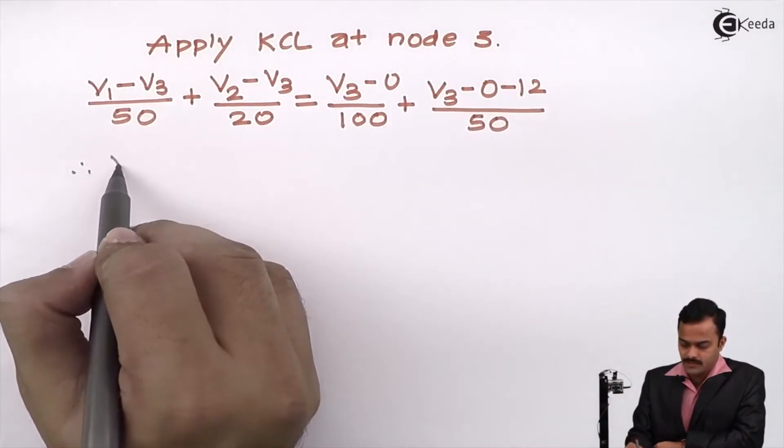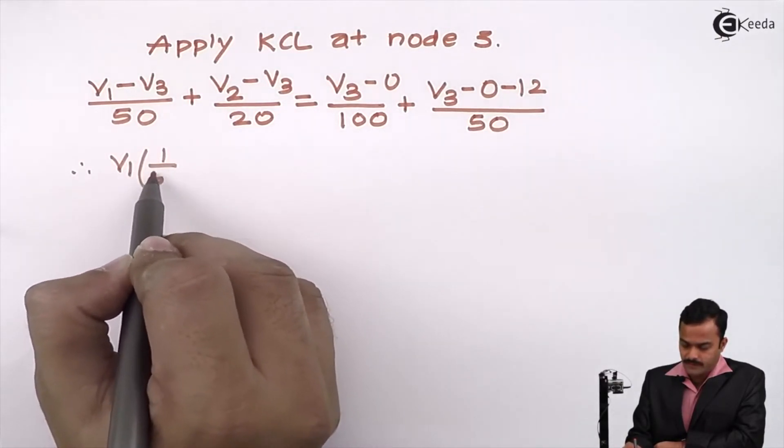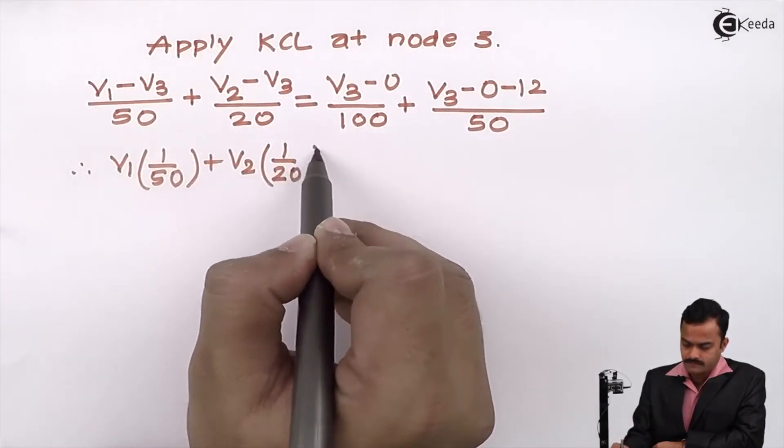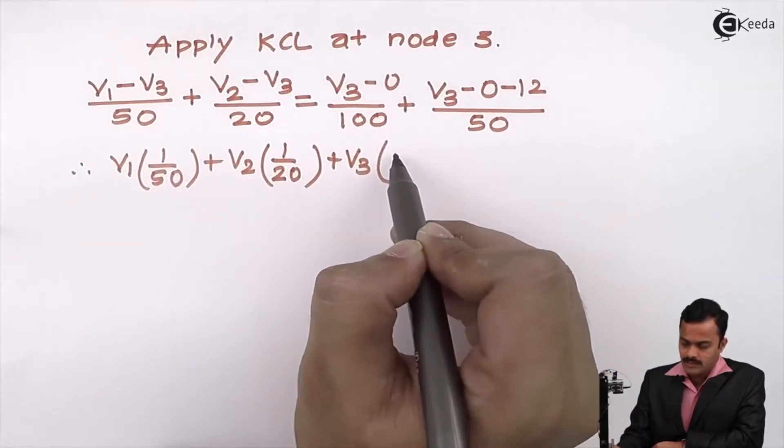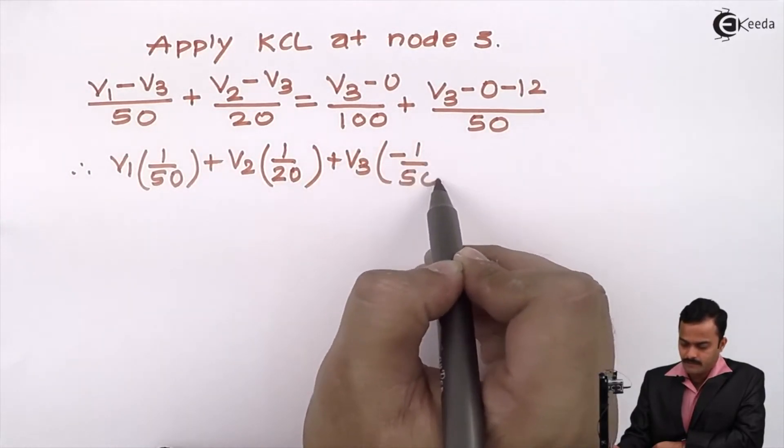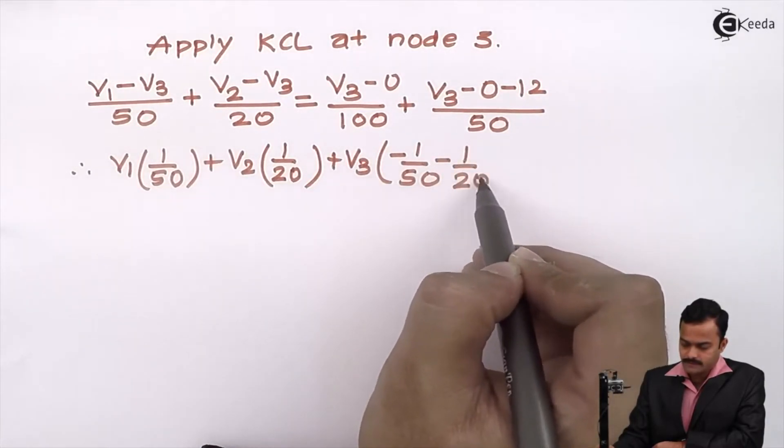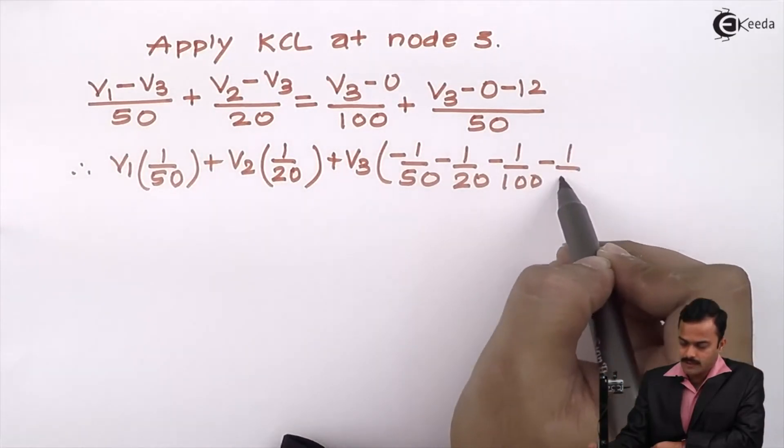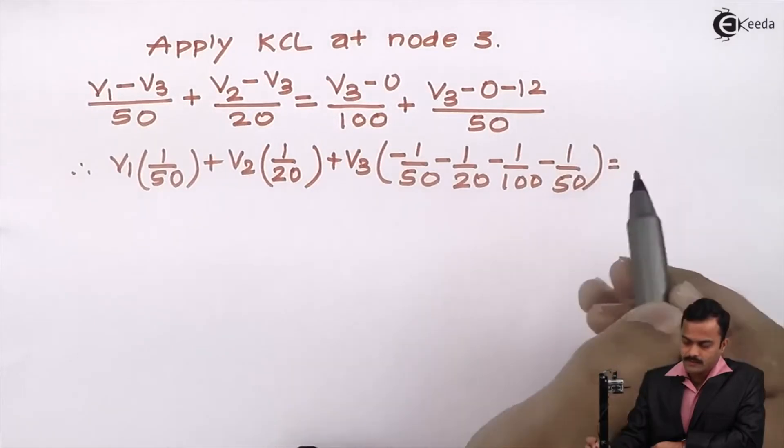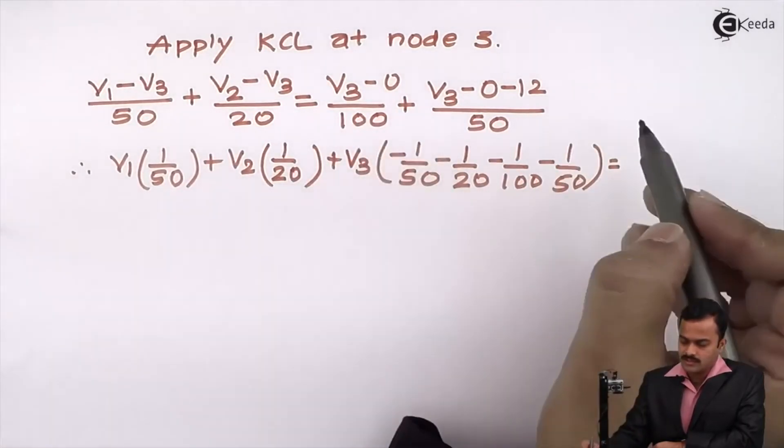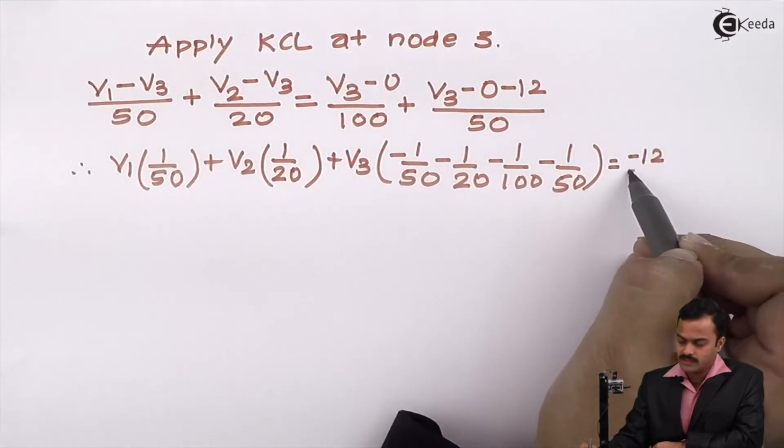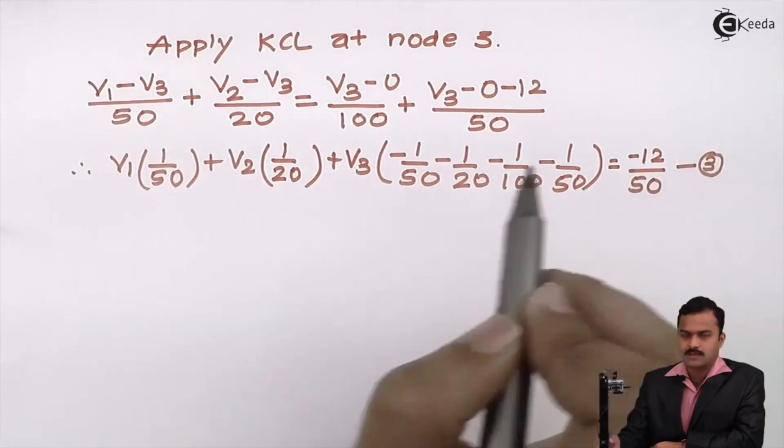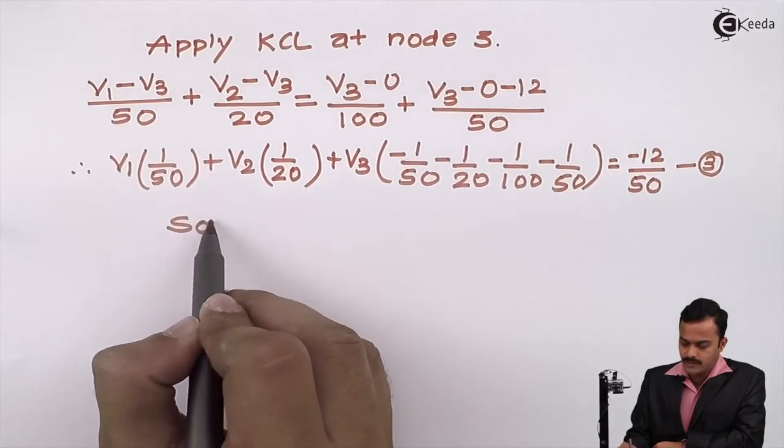Let's rearrange the terms. V1 coefficient is 1 by 50. V2 coefficient is 1 by 20. V3, there are coefficients minus 1 by 50, minus 1 by 20, minus 1 by 50, minus 1 by 50, and minus 1 by 50 once again, equal to constant. The only constant that will be there on the other side of equation is minus 12 by 50. This will be equation number 3.